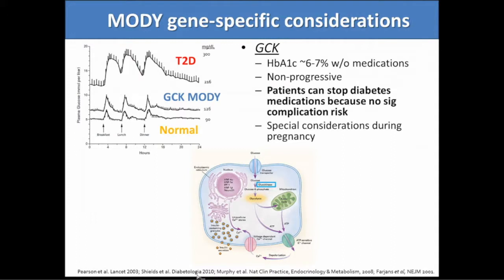GCK encodes glucokinase, a glucosensor or glucostat for the beta cells and the body, regulating where the normal range of glucose is. When there's a mutation in this gene, the normal range of glucose has been shifted slightly up — only a little bit, and glucose is still regulated. These patients will have a hemoglobin A1C typically in the 6% to 7% range without needing any medications, and even if you try to treat them, the body will resist and try to keep glucose in that range. Studies show they're not at significant risk for complications.